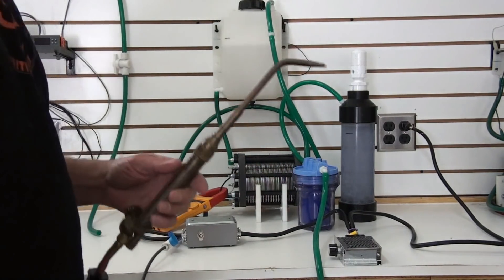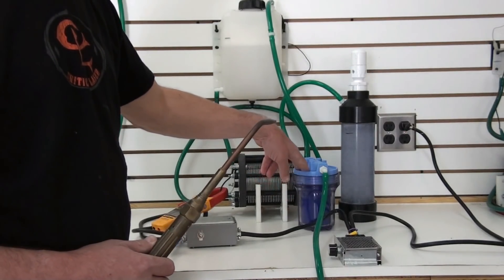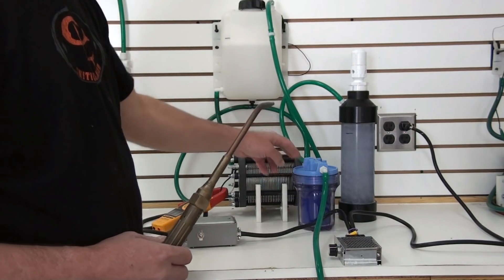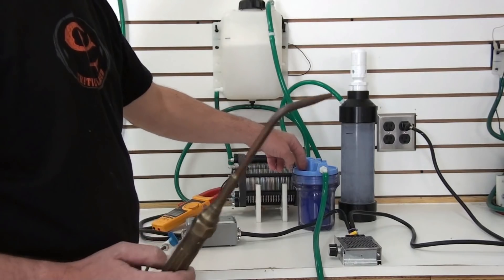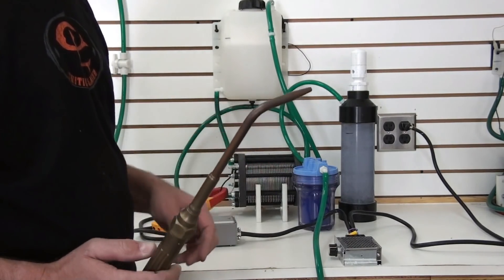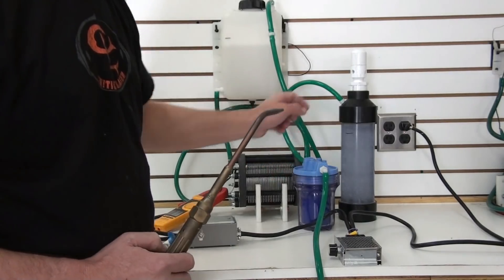What this does is this stops any flashbacks dead in their tracks. If you get a flashback from the end of your torch, when it hits this large flashback arrestor it'll stop it. So we're using two forms of safety here. Whenever you light hydrogen gas you need to always be safe. So we've got two forms of safety here.